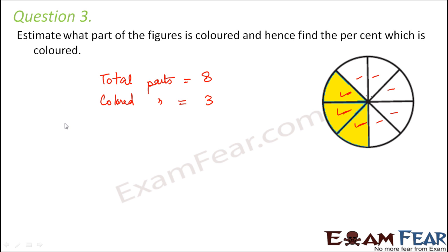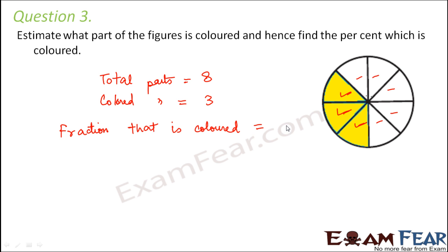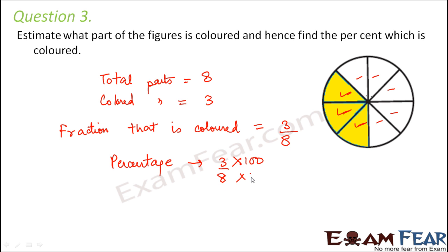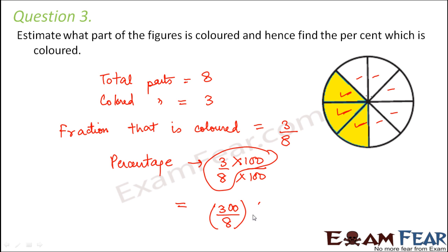So what fraction of the figure is colored? Fraction means how much out of the total parts is colored, so 3 parts out of 8 parts — that is 3 by 8. Now we have to find the percentage colored. We multiply the numerator and denominator by 100, giving 300 by 8 percent, which is 37.5 percent. So 37.5 percent of the figure is colored.